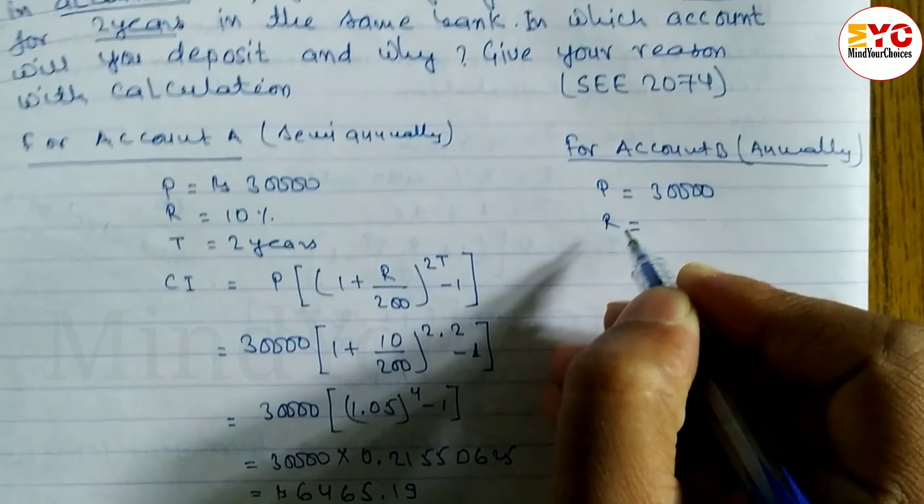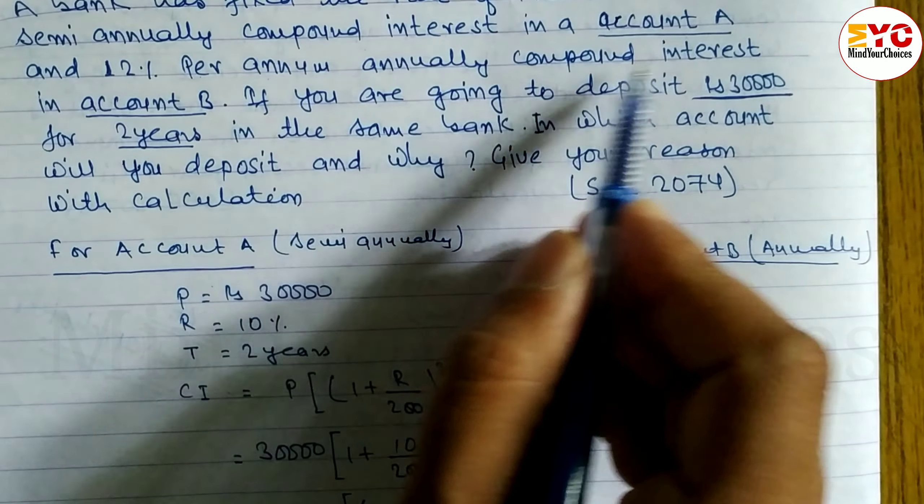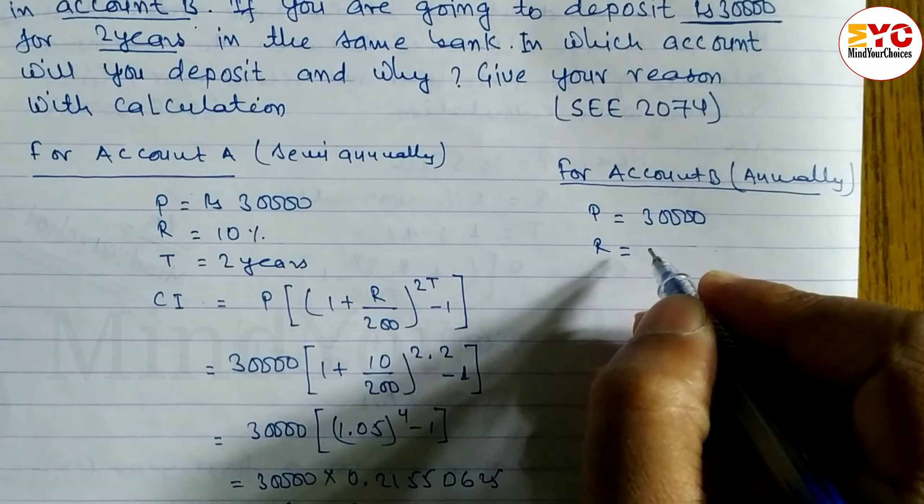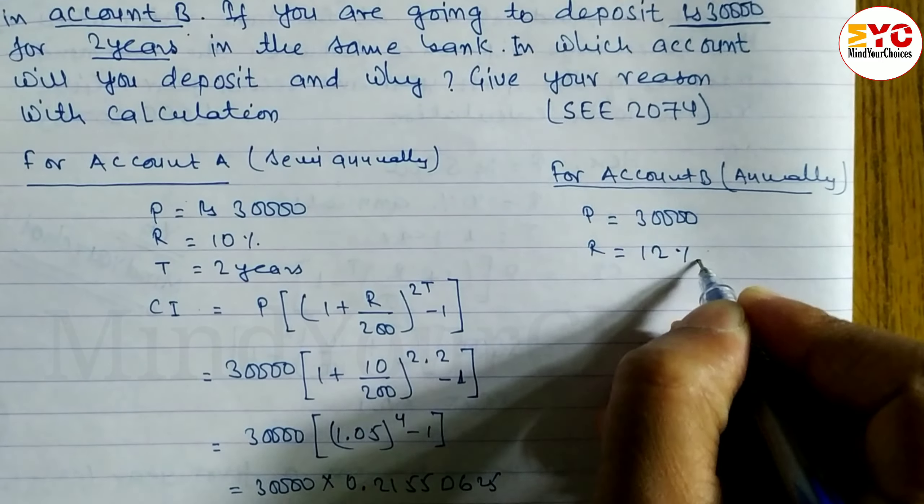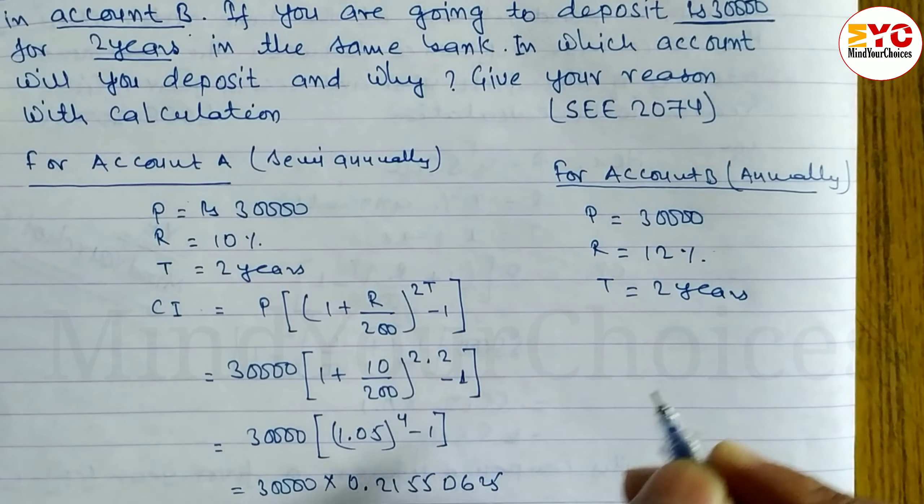Rate R is equal to for account B, rate is different. You can see here, 12% per annual compound interest in account B. Percentage is rate of interest 12%. So 12%. Time T is equal to 2 years. So write down here 2 years, annually.